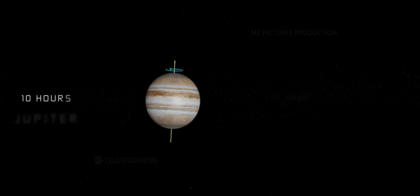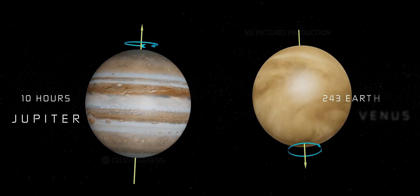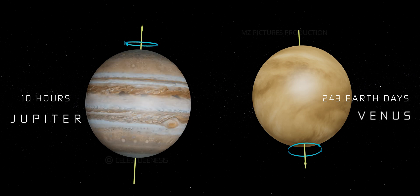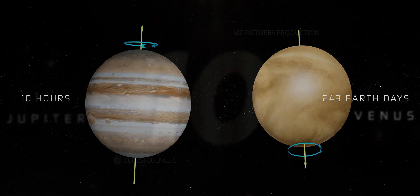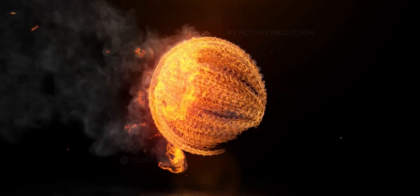The rotation periods vary significantly, from about 10 hours on Jupiter to 243 Earth days on Venus. These rotations result from factors like the planet's initial formation and impacts from celestial bodies. Now let's look into each planet's rotation.